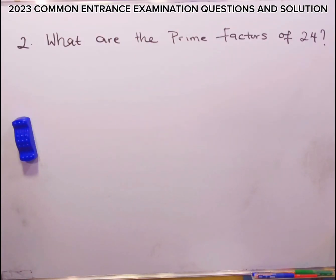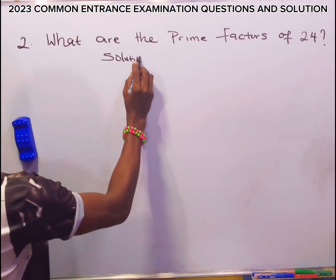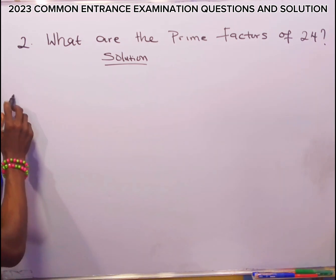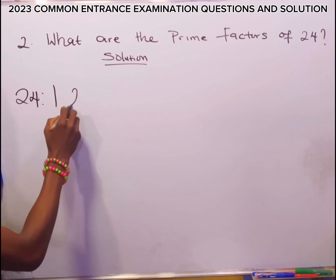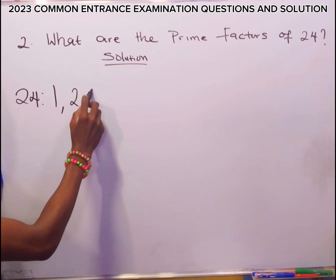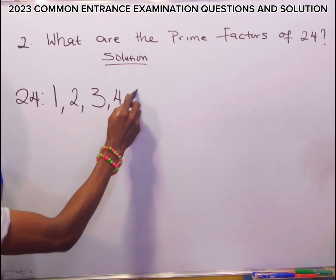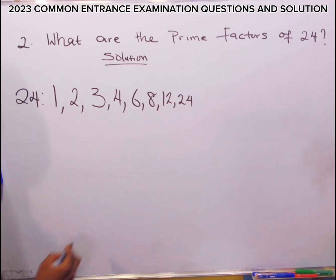What are the prime factors of 24? Let's first of all answer this question by getting the factors of 24. The factors of 24 are 1, 2, 3, 4, 6, 8, 12, and 24.